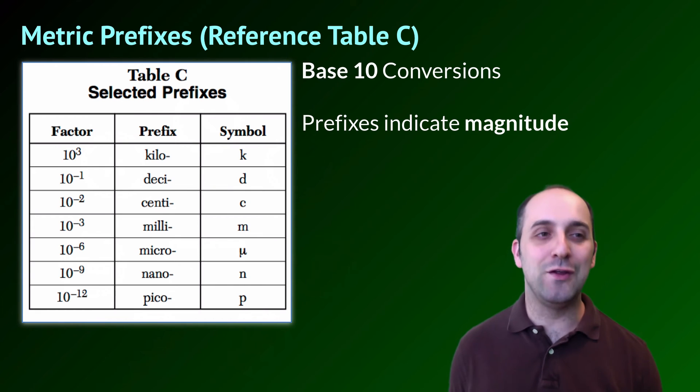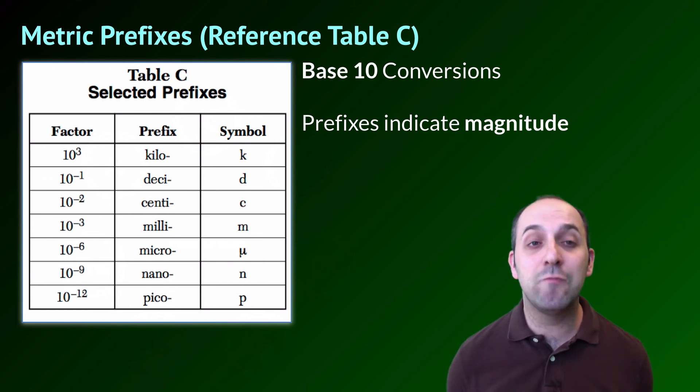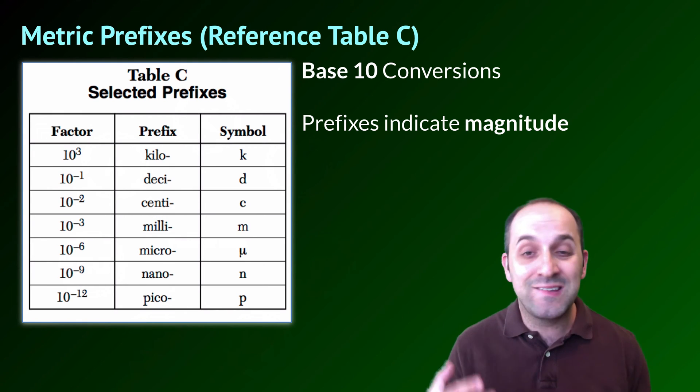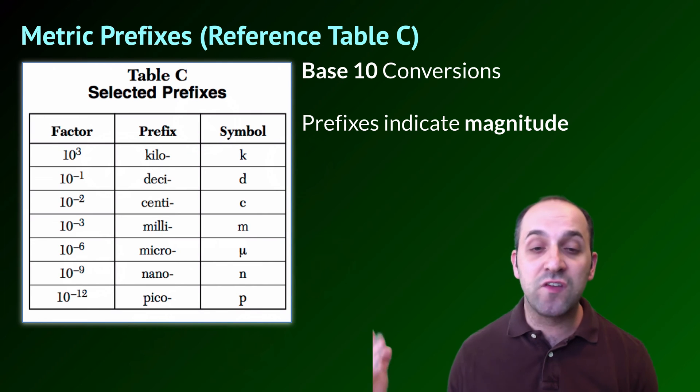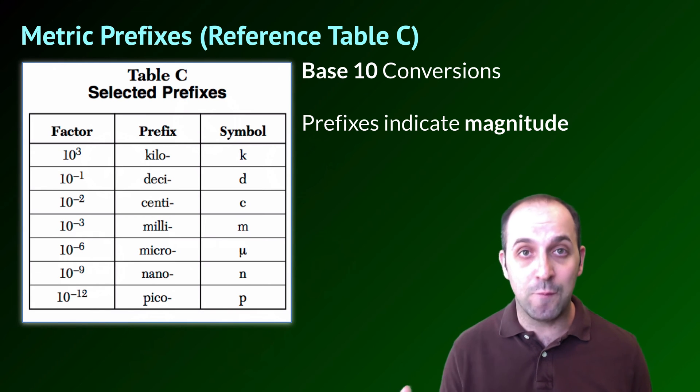The other really important reference table to use when we're doing our investigations and taking our data is reference table C, which is the table of metric system prefixes. As you probably have already learned, metric units are modified as you go up or down by a power of 10. They use base 10 conversions, in other words. And we use a series of prefixes to indicate magnitude. You've probably learned all of the prefixes starting from kilo, which is 10 to the third, or a thousand of the base unit, and going all the way down to milli, which is 10 to the negative third, or a thousandth of the base unit.